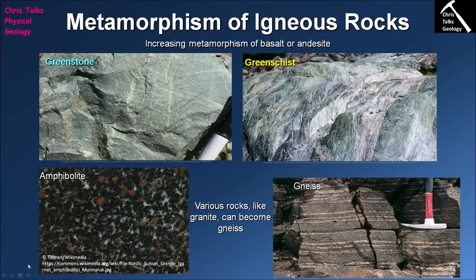If we keep increasing pressure and temperature even further, we eventually cause the amphibole to become unstable and it alters to give us the mineral pyroxene. When this happens, our amphibolite has changed into another type of rock referred to as a granulite. Once again, by tracking the mineral changes we are keeping track of how the metamorphic conditions are changing as we metamorphose our basaltic protolith.